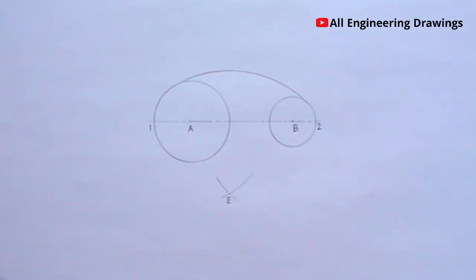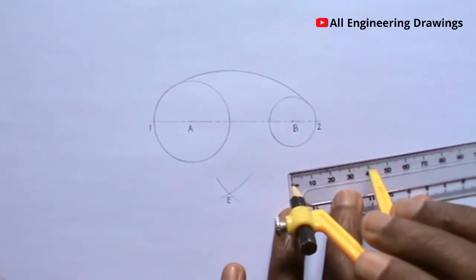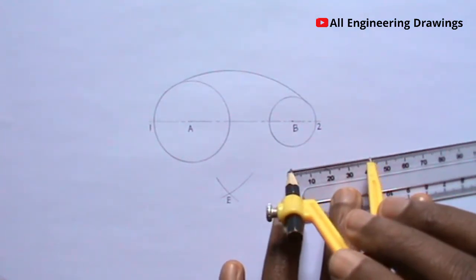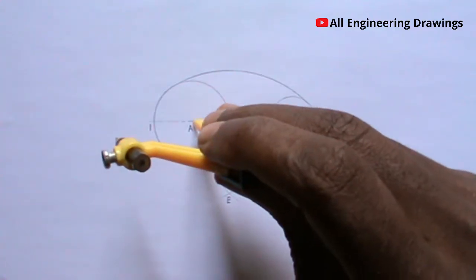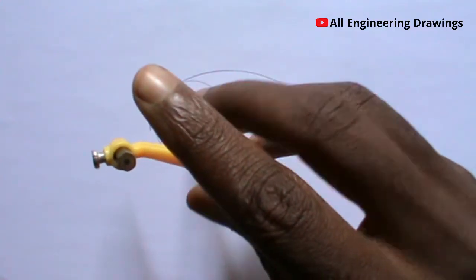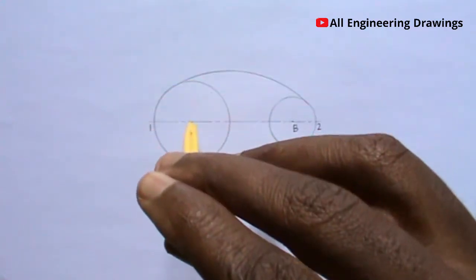Now to draw the external arc, add the radius of the external arc plus the radius of the bigger circle. Extend your compass to the value you obtain, then place your compass on point A and cut an arc.